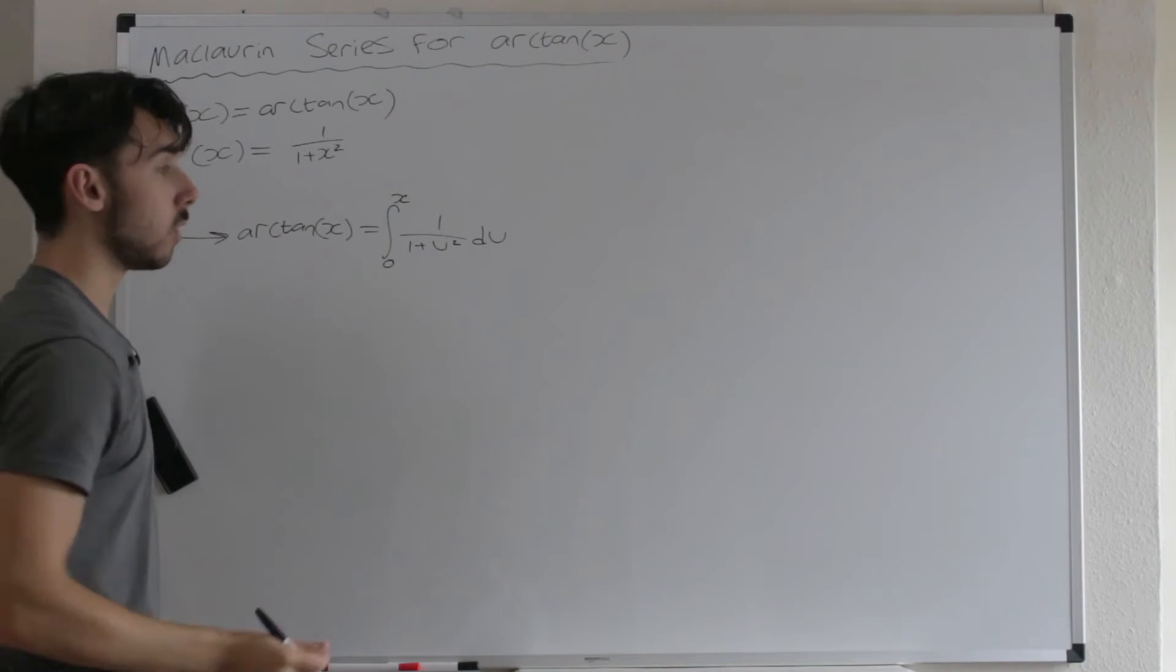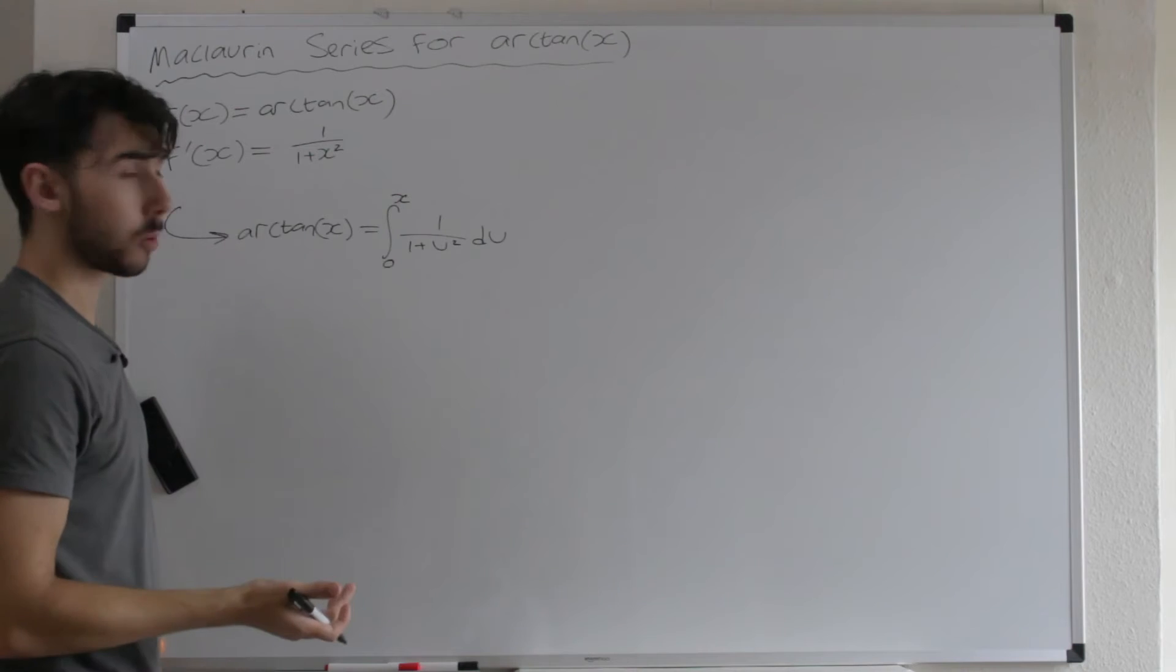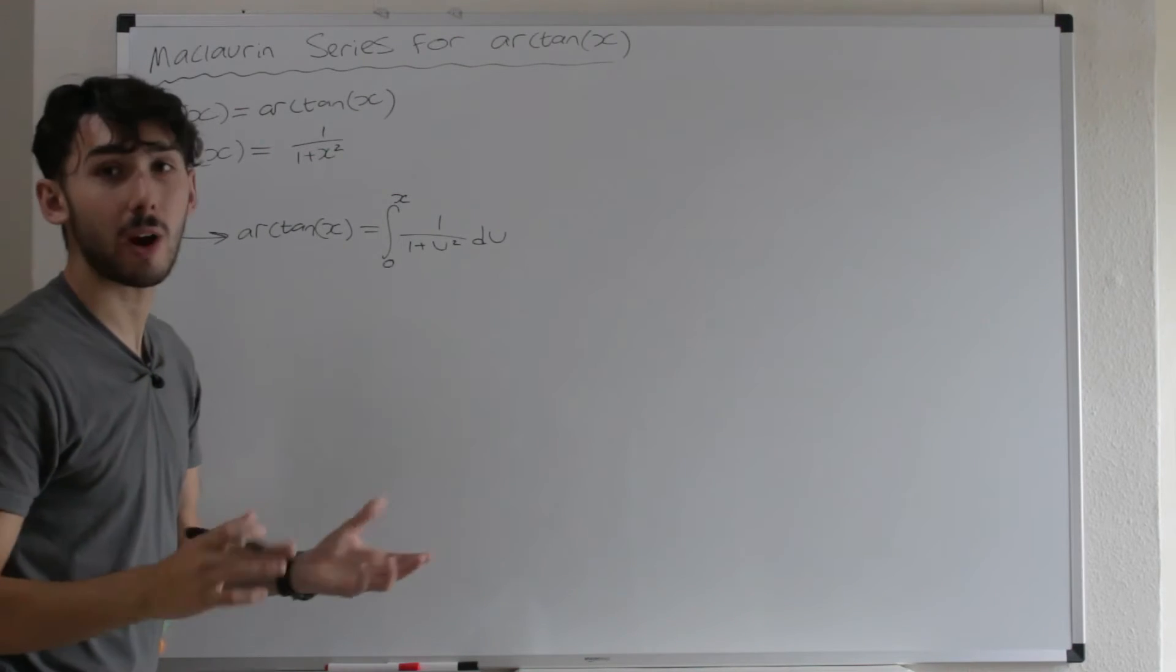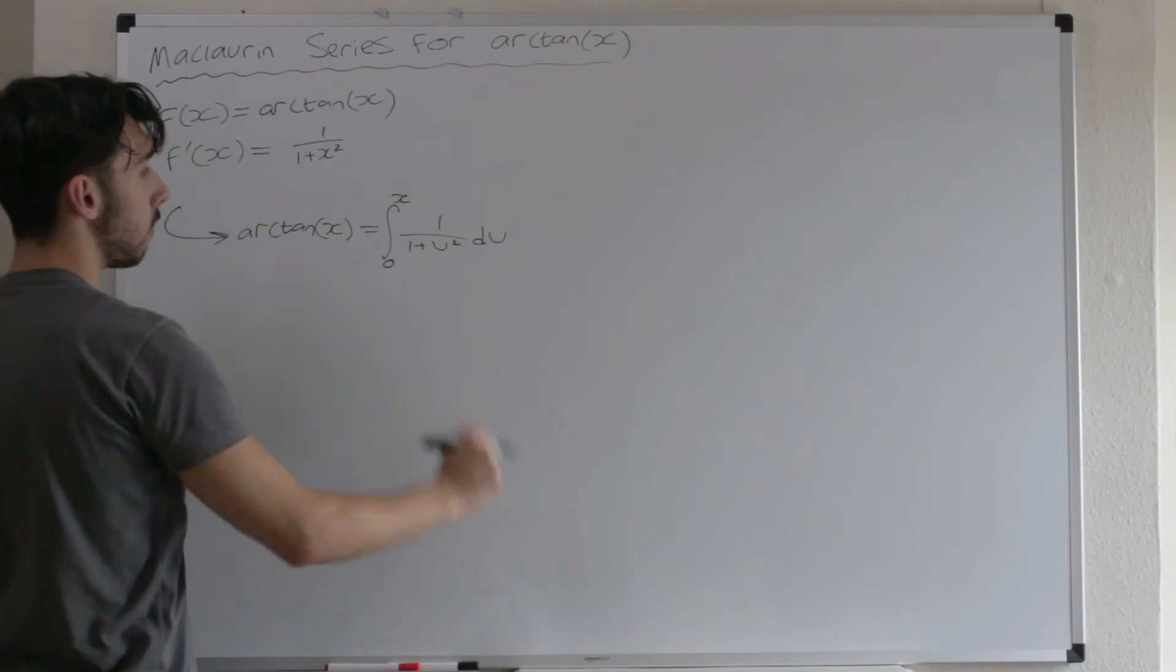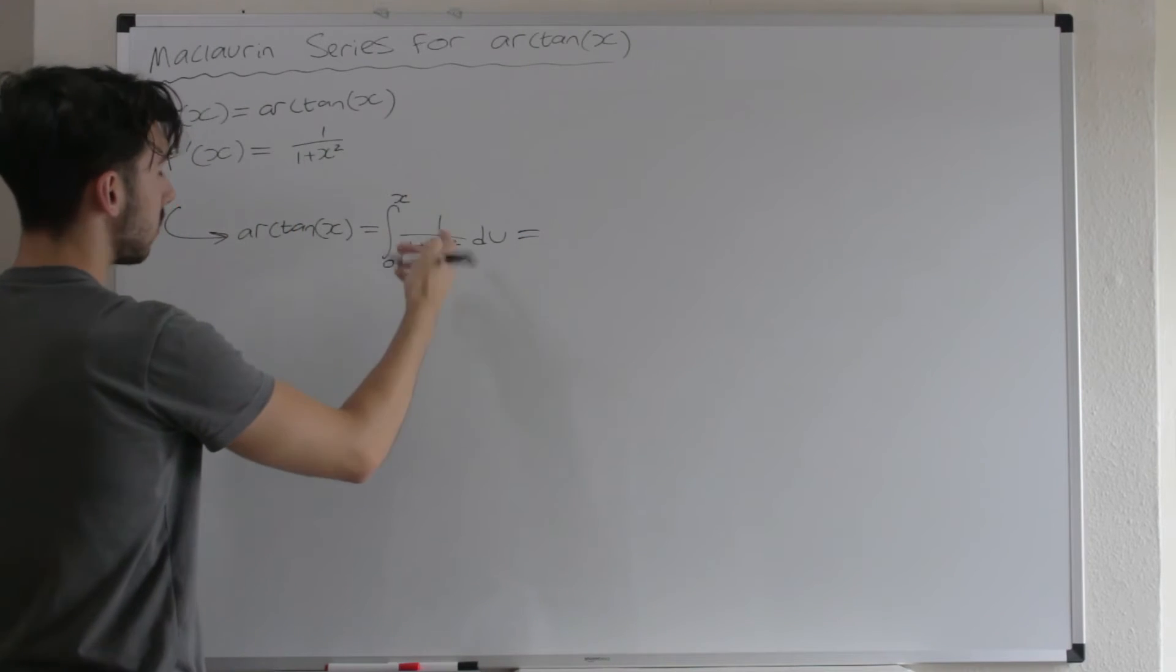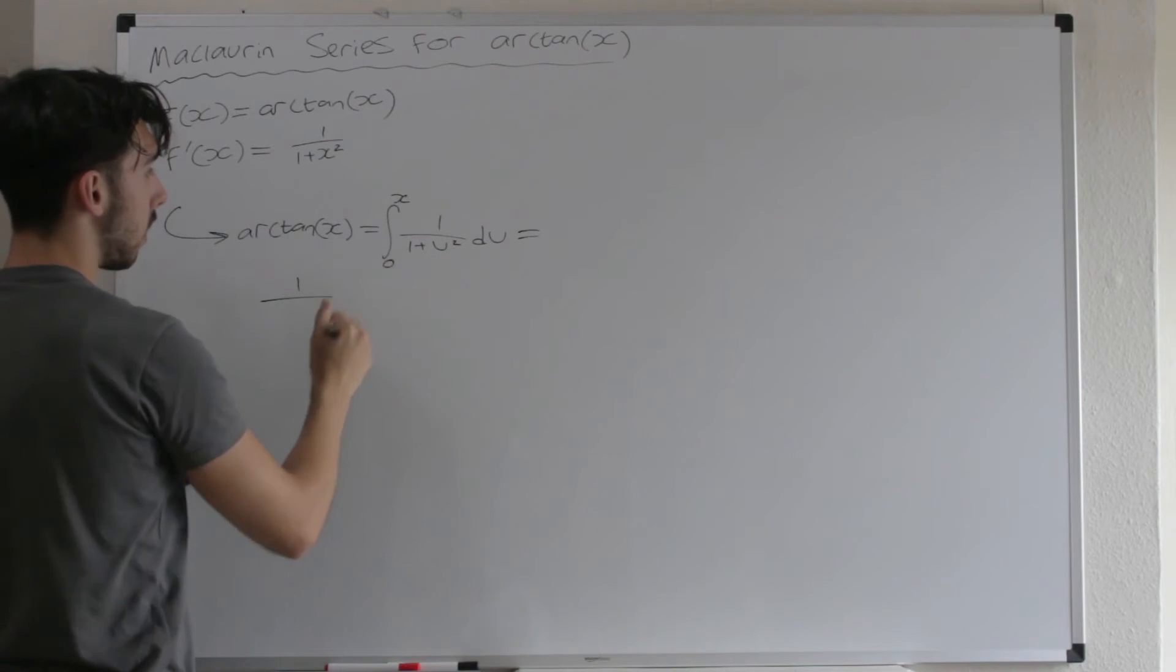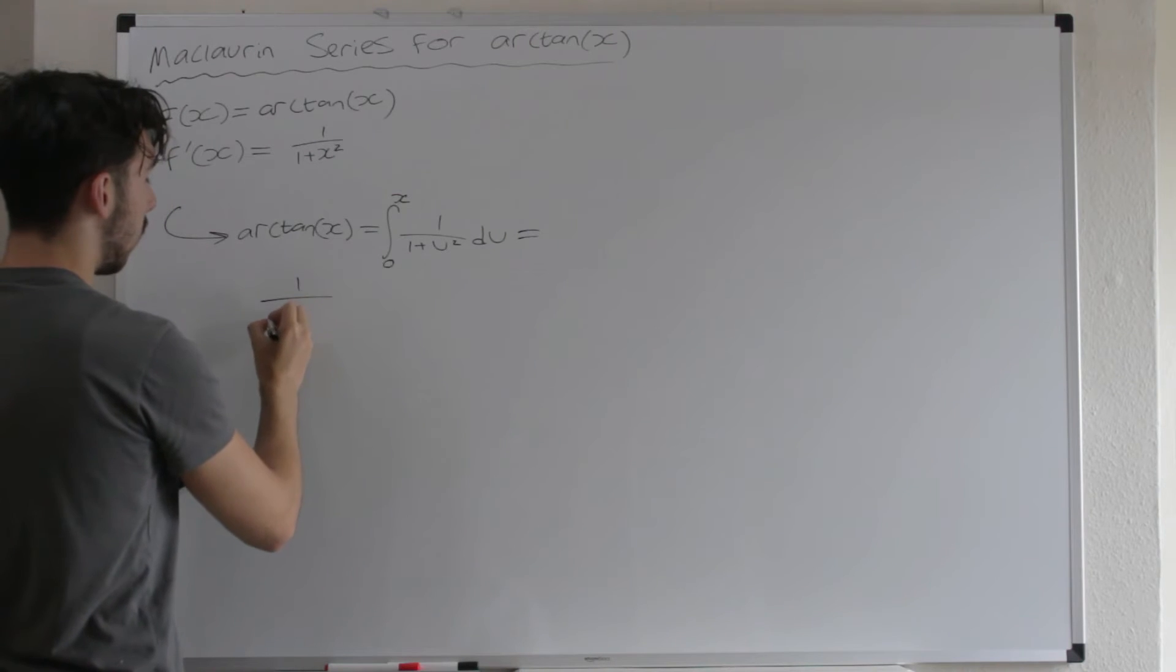So why did we do it? Well, 1 over 1 plus U squared has got its own Maclaurin series or binomial series or geometric series, whatever you want to call it. It's got its own series and we're just going to integrate it at the end. So 1 over 1 plus U squared. What is it? Well, we can do something a little bit devious. As we said in the previous Maclaurin series video, 1 over 1 plus U, which was in the last video, can be written as 1 over 1 minus minus U.